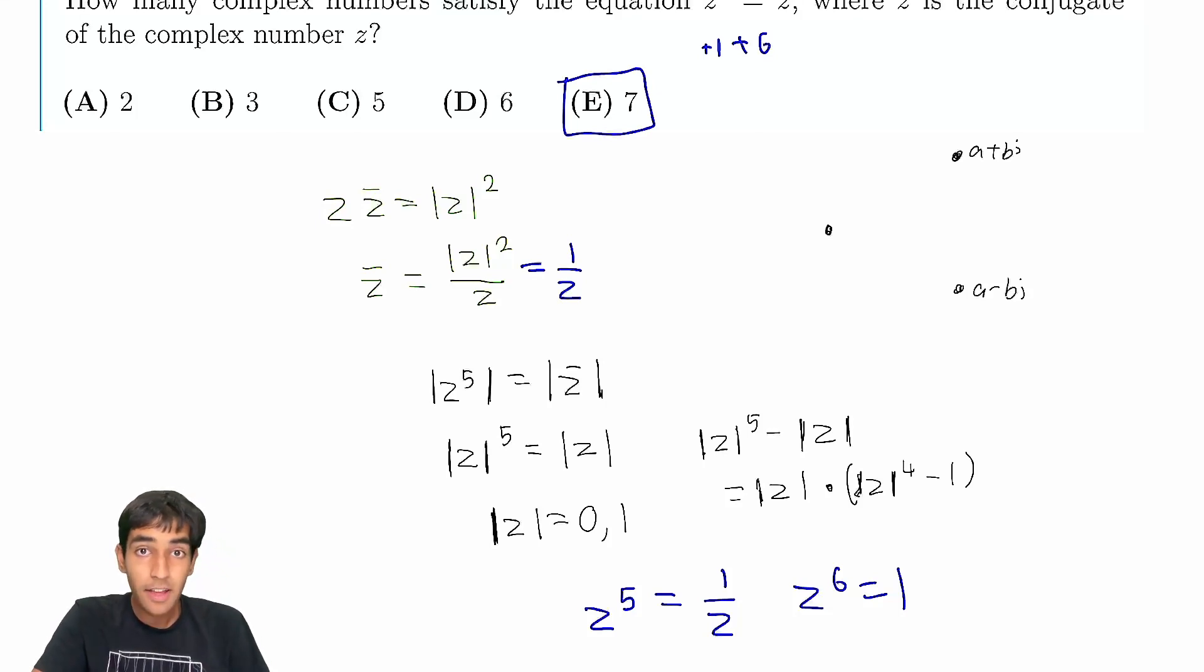A great problem in complex numbers, the key idea was this identity, and realizing that we want to find the magnitude, because that will give us a nice expression for z conjugate. To find the magnitude, we just look at magnitudes of our complex numbers equation.